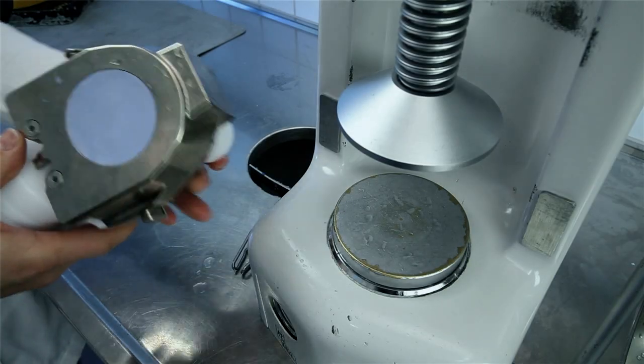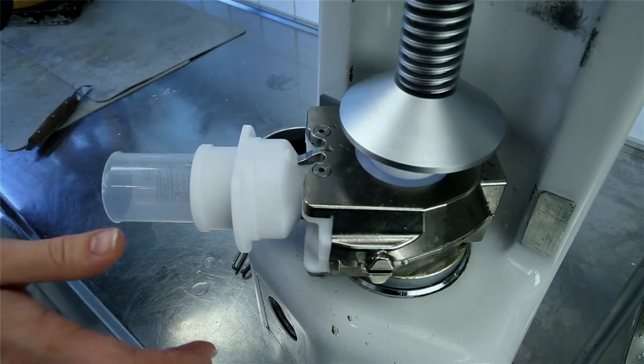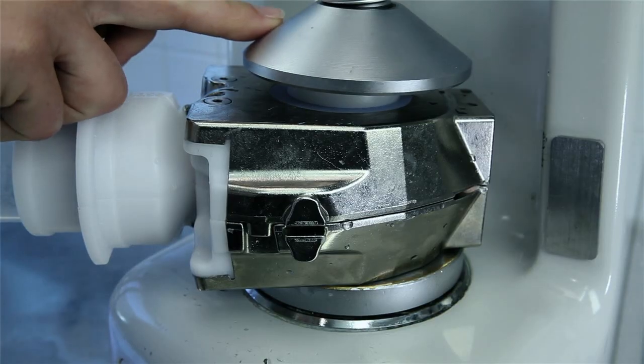Place the flask under a dental press with the divesting aid positioned between the stone and the press table. Load the divesting aid with slight pressure.